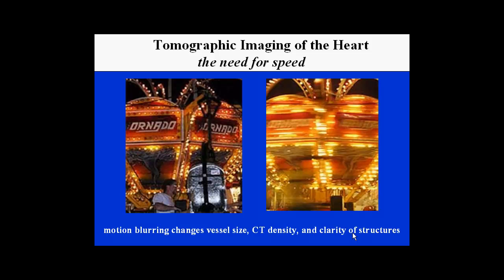Motion is the major problem with performing cardiac CT. Any motion during the examination can change the overall clarity and density of the material. With respect to cardiac CT, motion blurring can change the size of the vessel — either larger or smaller — can change the CT density, which is essential for the diagnostic ability, and furthermore, the clarity of structures.